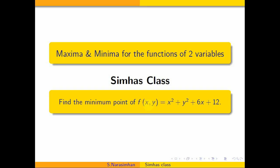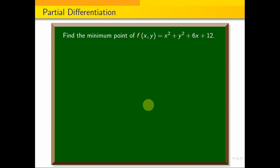Let's look at finding the minimum point. Find the minimum point of f(x,y) = x² + y² + 6x + 12. This is our problem.